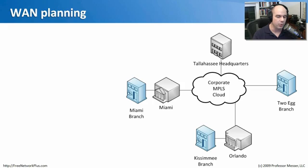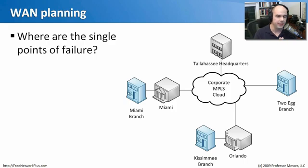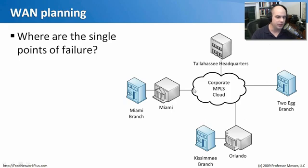Let's talk about planning out a wide area network. If you remember from our last module, this was our wide area network — our logical design of our WAN that we had configured. The question is, where are our single points of failure? This is all based in Florida for this wide area network, so things like hurricanes might be a concern. You can see from this logical network diagram, almost this entire network has points of failure.